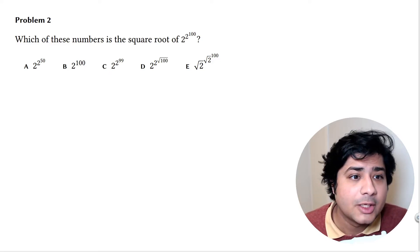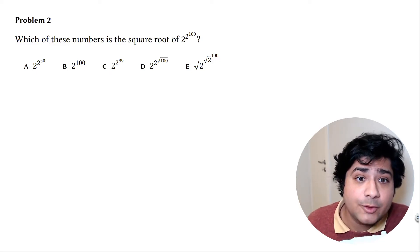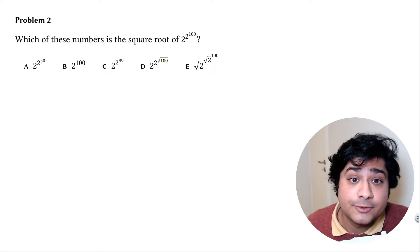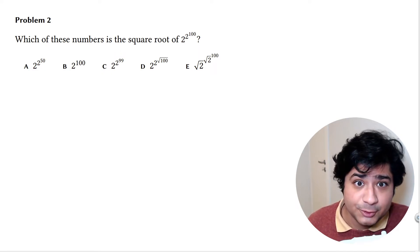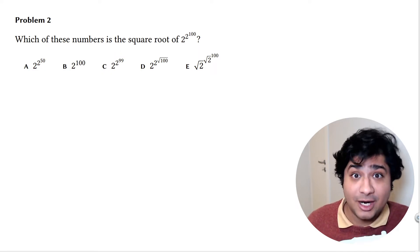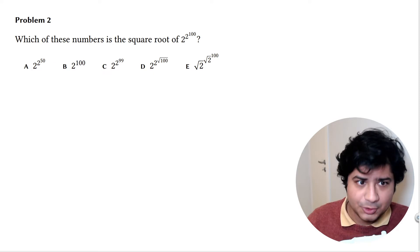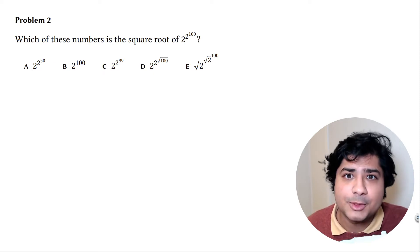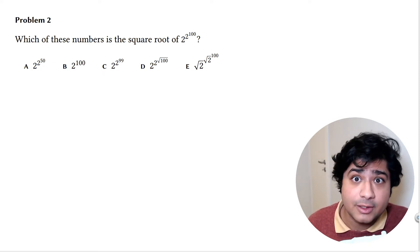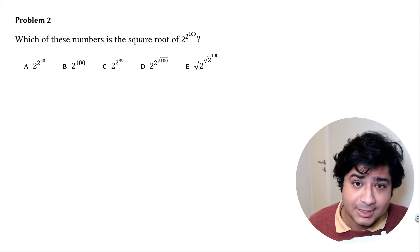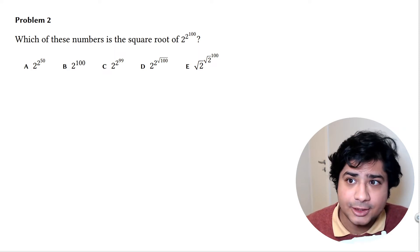Problem 2. Which of these numbers is the square root of 2 to the power of 2 to the power of 100? They give you 5 options, one of which is the square root of that very weird number. Let's take a closer look.